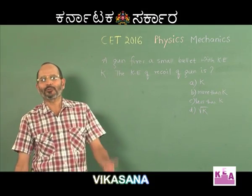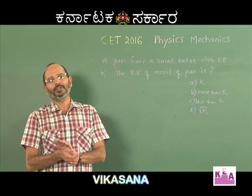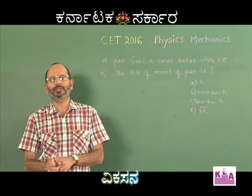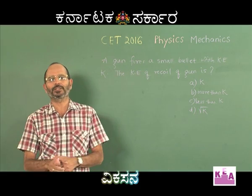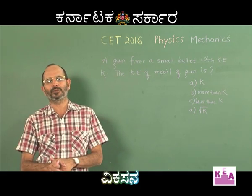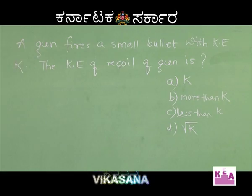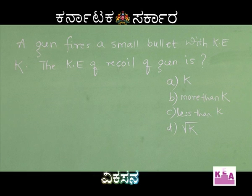Here is one more problem from collision, but it is a very simple problem. I think you can even select the answer without solving it. A gun fires a small bullet with a kinetic energy of k, and you are asked to find out the kinetic energy of the recoil of the gun.